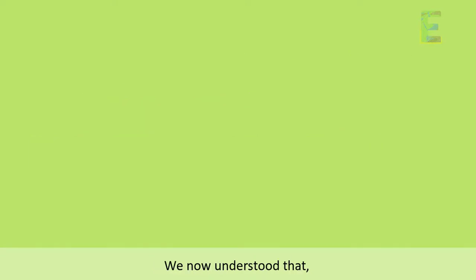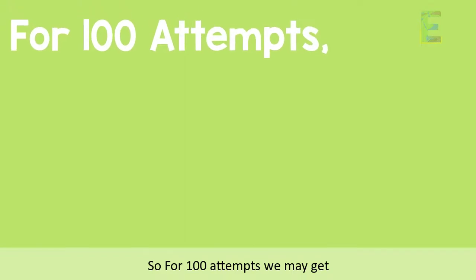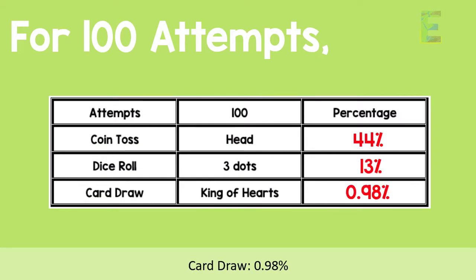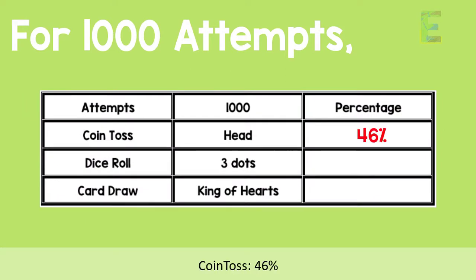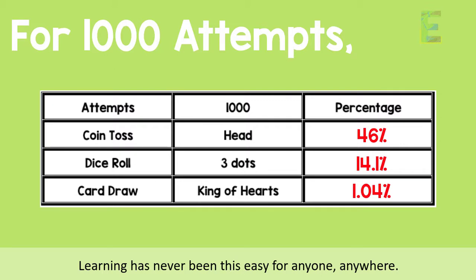Going back to the example, we now understand that we can get closer to the theoretical values when we increase our attempts. For 100 trials, we may get 44% on coins, 13% on dice, and 0.98% on cards. For 1,000 attempts, we may get 46% on coins, 14.1% on dice, and 1.04% on cards — and so on. Pretty amazing, right?